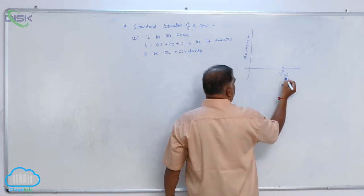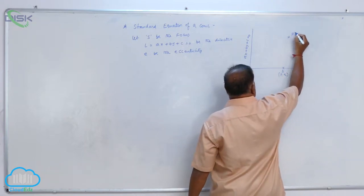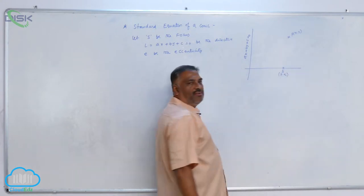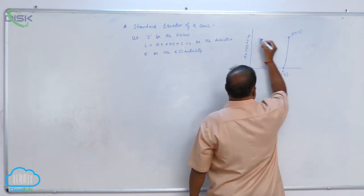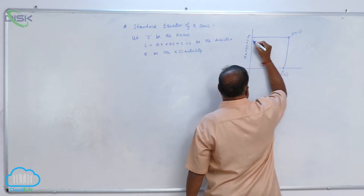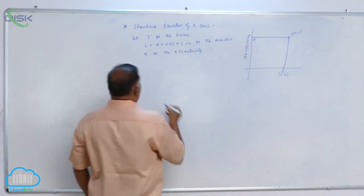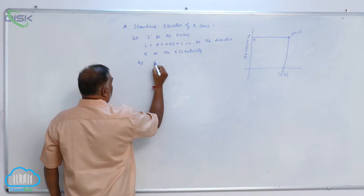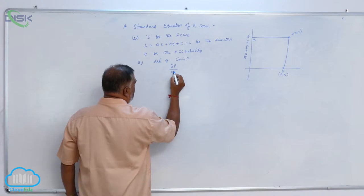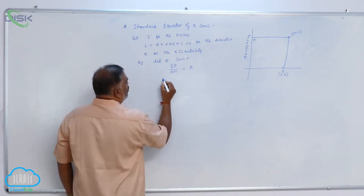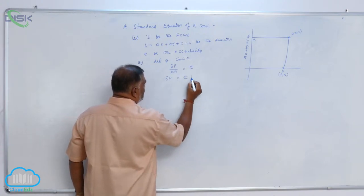Assume that the point is P(x,y), a variable point. Now, join these two and draw perpendicular like this M. So, by definition of conic, we know that SP by PM is equal to E. So, SP is equal to E times PM.